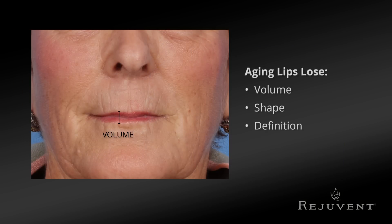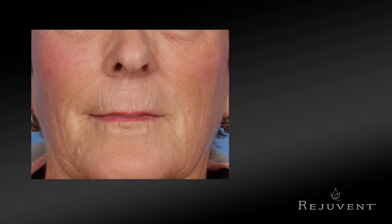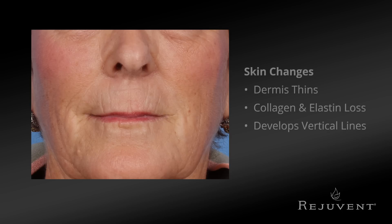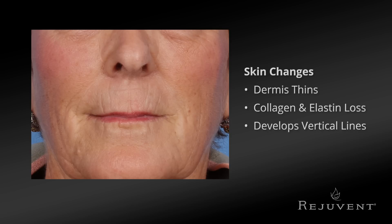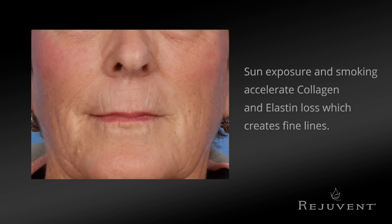With age, lips lose volume, shape, and definition. The commissures start to thin out, widen, and turn down. The skin of the upper lip also shows age — the dermis becomes thinner, losing collagen and elastin, which leads to the vertical lines that develop above the upper lip. Factors such as sun exposure and smoking accelerate the loss of collagen and elastin and the development of these fine lines.